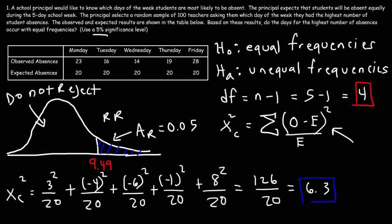So this is our calculated chi-squared value. So let's place that value on a graph, which should be somewhere in this region. So as we can see, our calculated chi-squared value lies in the do-not-reject region.